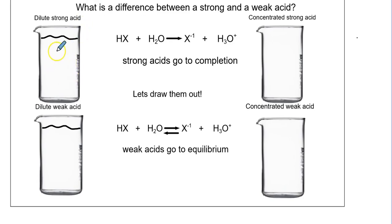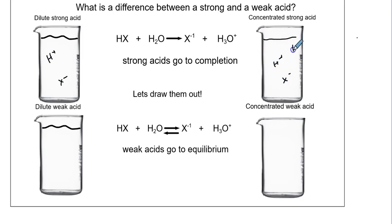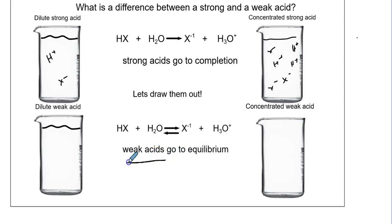So what does a strong acid do? A dilute strong acid goes to completion. So it would just be H+ and X-. This would just be H+ X-, H+ plus X-, H+ X-. A weak acid goes to equilibrium, and typically speaking they're very much reactant-favored.